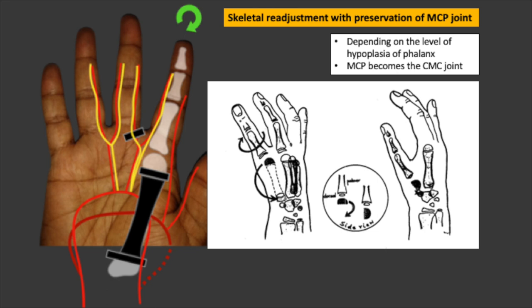The next important step is skeletal readjustment with preservation of the metacarpophalangeal joint. The degree of skeletal shortening depends upon the level of hypoplasia of the phalanx. If the phalanges are hypoplastic, a part of the metacarpal length is preserved. However, if the lengths are adequate, the entire metacarpal bone of the index finger is removed and only the metacarpal head is preserved. The metacarpophalangeal joint then becomes the carpometacarpal joint, as shown in the inset photograph.